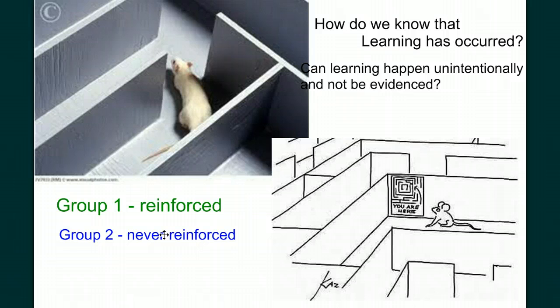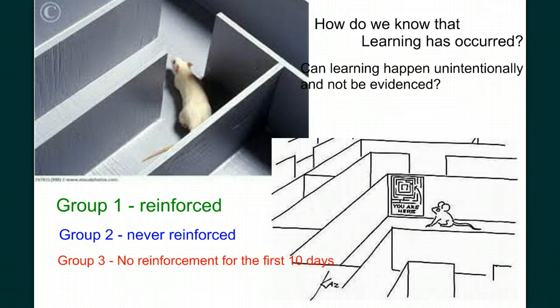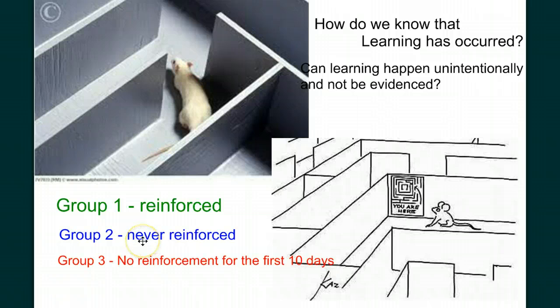Then Tolman took a third group of rats. For the first ten days of the trial, he gave no reinforcement — he put the rats in the maze and gave them no reinforcement if they made it to the end. The data on the number of errors for this group mirrored the results of the previous group that had not been reinforced. That makes sense, because so far they had the exact same conditions. But then, on day 11, Tolman finally started reinforcing the rats for getting to the end.